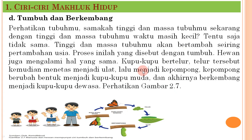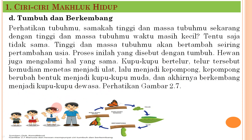Ciri selanjutnya adalah tumbuh dan berkembang. Tinggi dan masa tubuh kita sekarang tidak sama dengan waktu masih kecil; tinggi dan masa tubuh akan bertambah seiring pertambahan usia, inilah yang disebut tumbuh. Hewan juga mengalami hal yang sama. Misalnya kupu-kupu bertelur, telur menetas menjadi ulat, lalu menjadi kepompong, kepompong berubah menjadi kupu-kupu dan berkembang menjadi kupu-kupu dewasa. Ini contoh pertumbuhan dan perkembangan dari manusia dan kupu-kupu.